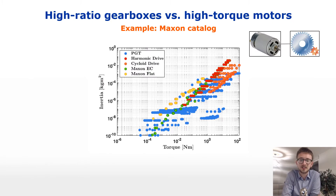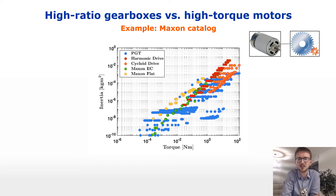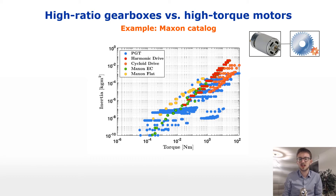What caught my eye in this paper is one specific graph, which is quite useful if we're going to discuss the use of high-ratio gearboxes versus high-torque motors. I'll walk you briefly through this graph and explain why it's so important. When discussing high-ratio gearboxes and high-torque motors, we care a lot about the dynamics of the actuator, and one of the things that characterizes those dynamics is precisely the inertia of the motor and the gearbox — which is why we have that on the y-axis.